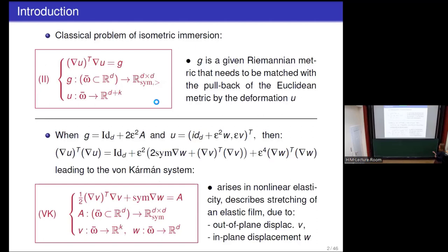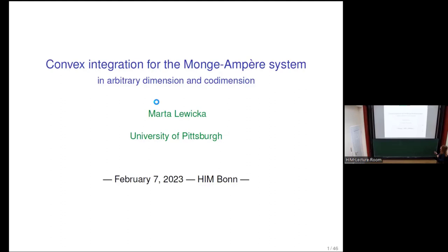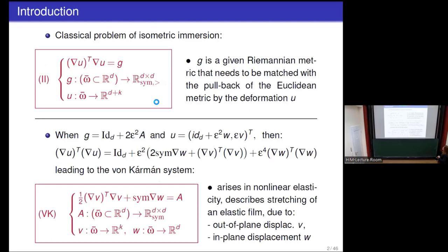This is my book. I'm going to start with a very classical problem which sets the plan for analyzing this new system. That is the generalization of the scalar Monge-Ampère equation from two dimensions to higher dimensions. Let's start with the very classical problem: isometric immersion. We are looking for an isometric immersion of a given Riemannian metric G into a space of k dimensions higher than the domain Omega.